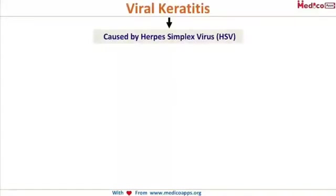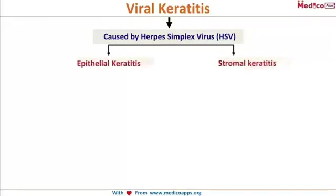This is viral keratitis, caused by herpes simplex virus. The herpes viruses are unique in that they affect the cornea — most other viruses do not. It can affect the cornea in two different ways: it can cause only an epithelial keratitis, or it can go deep into the stroma and cause a stromal keratitis.